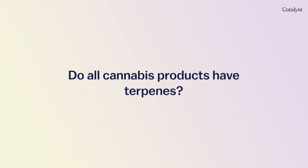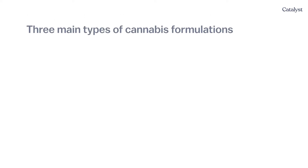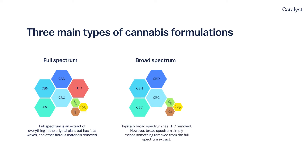Not all cannabis products contain terpenes. There are three main types of cannabis formulations. First, full spectrum — extracted with minimal interference to maintain and preserve the original plant composition, containing all cannabinoids, terpenes, and flavonoids. Next, broad spectrum — similar to full spectrum except something has been removed, usually THC, but not always. If prescribing broad spectrum believing it doesn't contain THC, check the certificate of analysis to make sure.